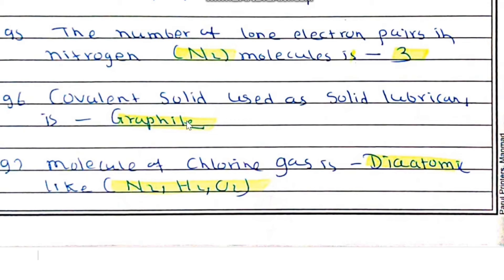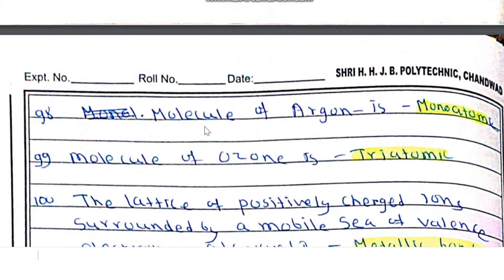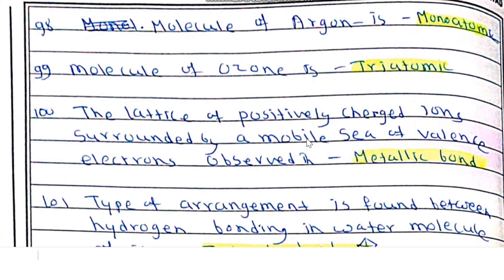Chlorine and hydrogen gas are diatomic molecules. H2O2 has two atoms of hydrogen and two of oxygen. The molecule of argon is monoatomic — all noble gases are monoatomic, meaning a single atom constitutes the molecule. The molecule of ozone is triatomic; O3, known as ozone, contains three atoms.